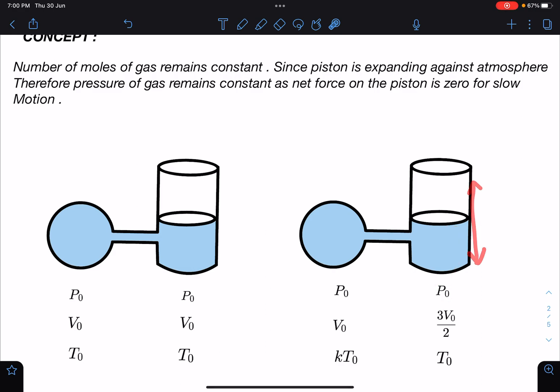And temperature remains constant, it is given in the problem statement. Other side, since this is connected here, so pressure here is going to be all the time P₀. It's a rigid container, here its volume is not changing.